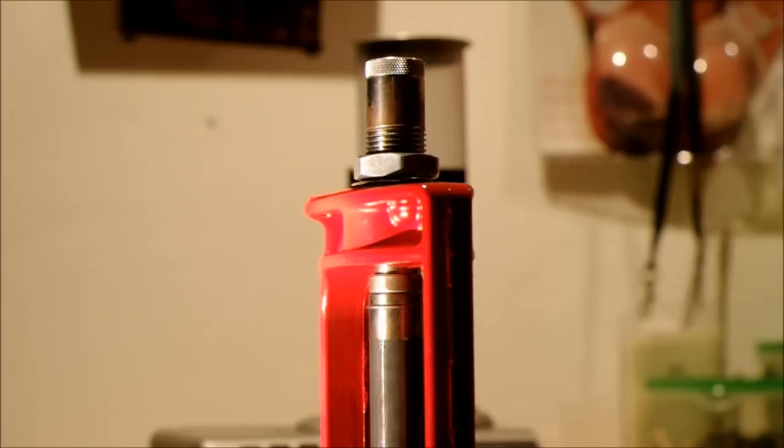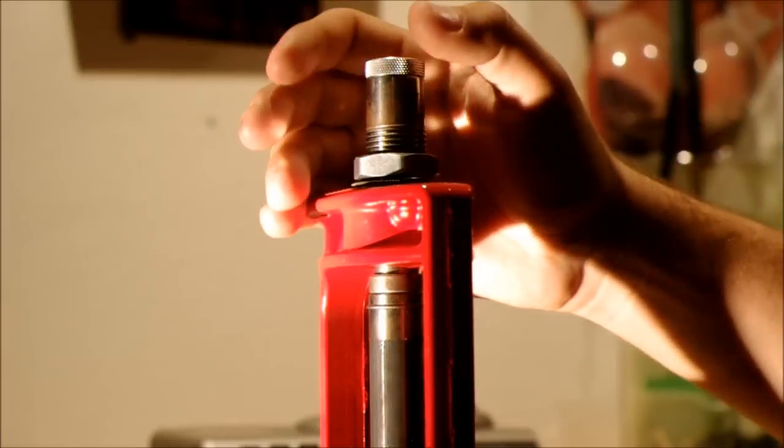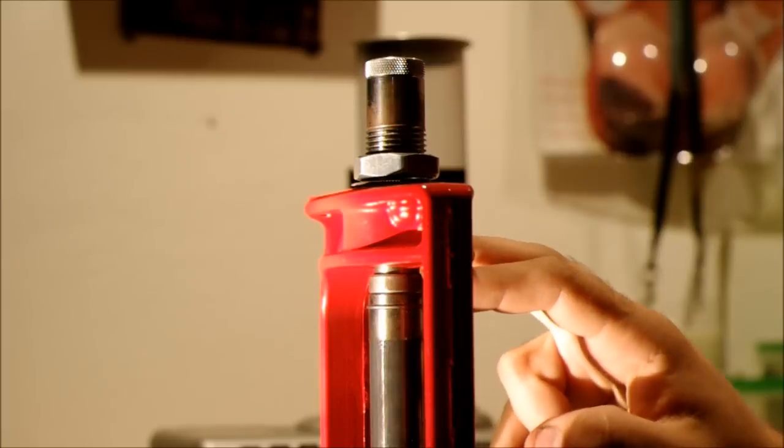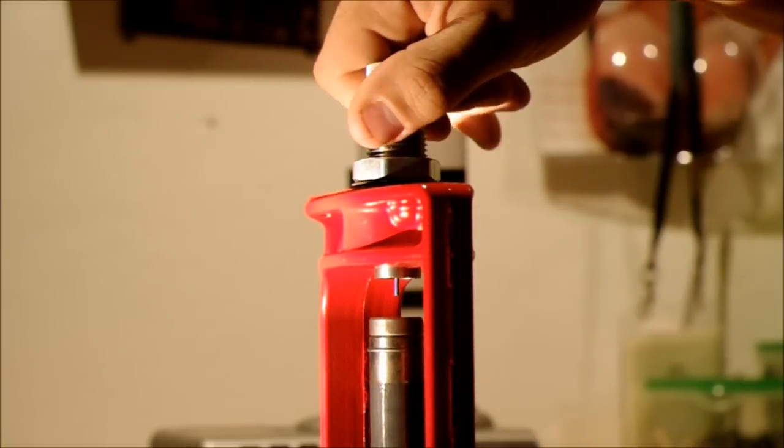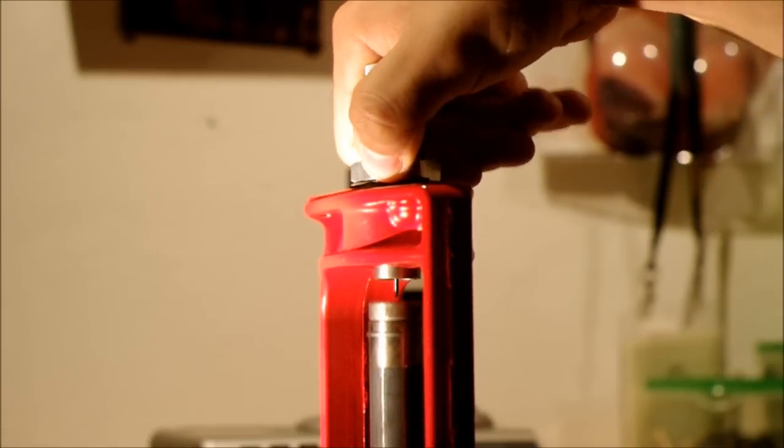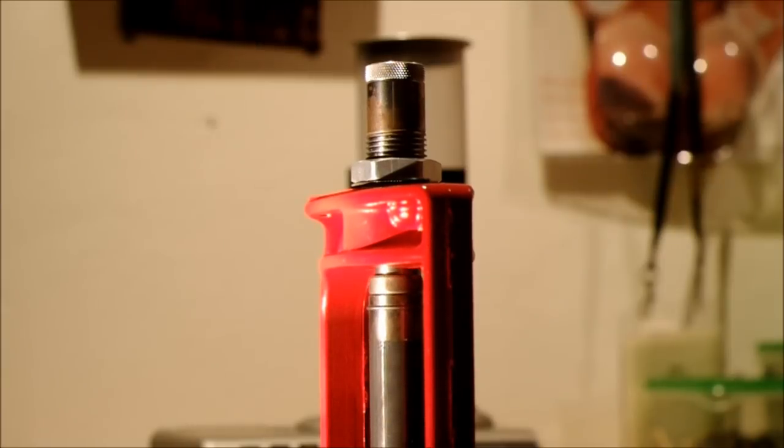So what you want to do is touch the bottom of the die to the shell plate, and then give it an extra full turn - a full turn to a turn and a half depending on what you need. As you can see, that's the die touching the shell plate.